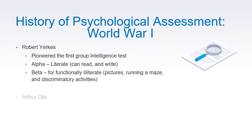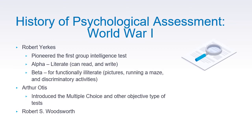Arthur Otis introduced the multiple choice and other objective types of tests. After him, Robert S. Woodsworth also created a personal datasheet, which we still use today when conducting psychological testing and assessment. He is also the proponent of the Woodworth Psychoneurotic Inventory.